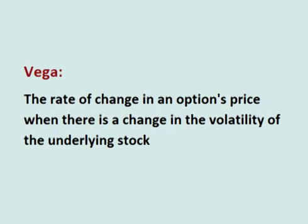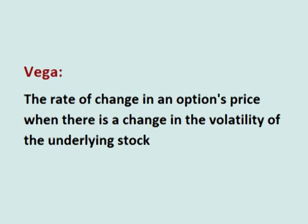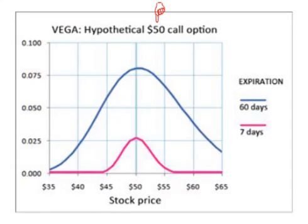Vega is the rate of change in an option's price when there is a change in the volatility of the underlying stock. When volatility increases, the cost of the option increases, and when volatility decreases, the cost of the option decreases. The amount that the change in volatility affects an option's price varies depending on the strike price. Changes in volatility have the most effect on an option's price when the option is at the money — in other words, when the strike price is the same as the current price of the stock.